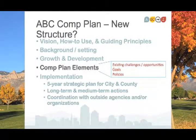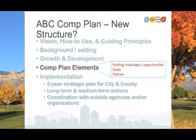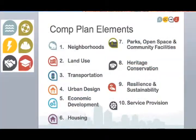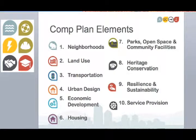The service provision chapter is a reorganization of much of the information from the existing comprehensive plan. This chapter is focused on those things that the city and the county don't directly control but will need to coordinate with other agencies and departments. The comprehensive plan will include 10 chapters organized by topic that will discuss existing challenges and opportunities and provide goals and policies that help us achieve our community vision. As an example, the city and the county will need to work with the Albuquerque-Bernalillo County Water Utility Authority to provide high-quality water into the future.